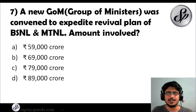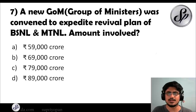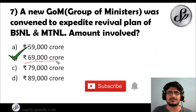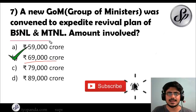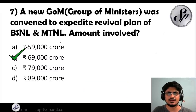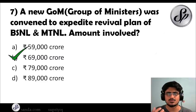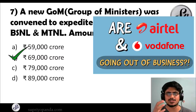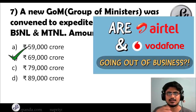Question seven: a new Group of Ministers was convened to expedite the revival plan of BSNL and MTNL. What is the amount involved? The answer is 69,000 crore. This is a very important revival figure. Both companies have been struggling — they were not even able to pay employees. The telecom industry at large is also going through AGR issues, which involve a 1.47 trillion rupee problem.